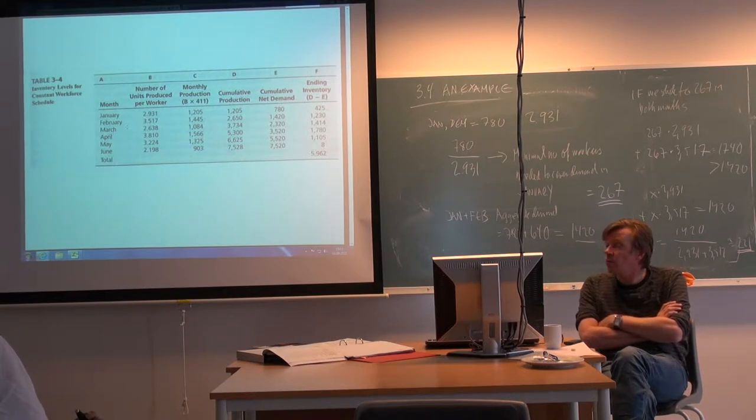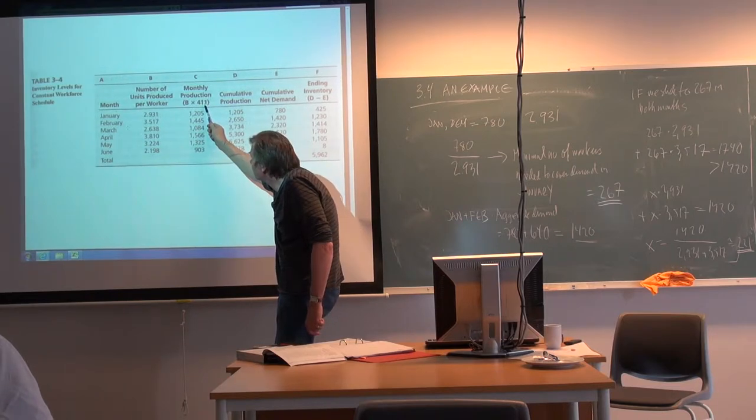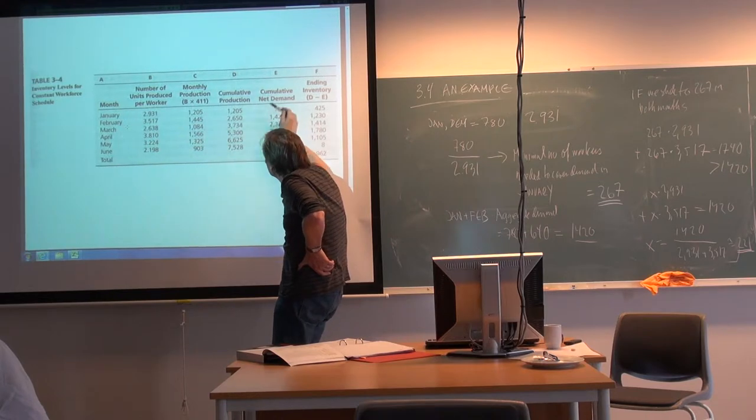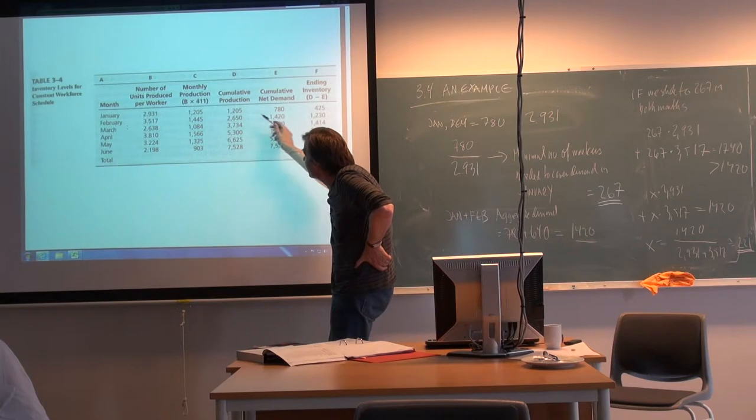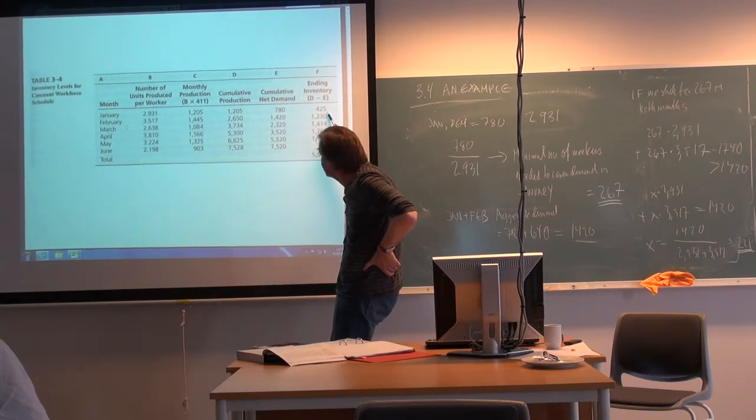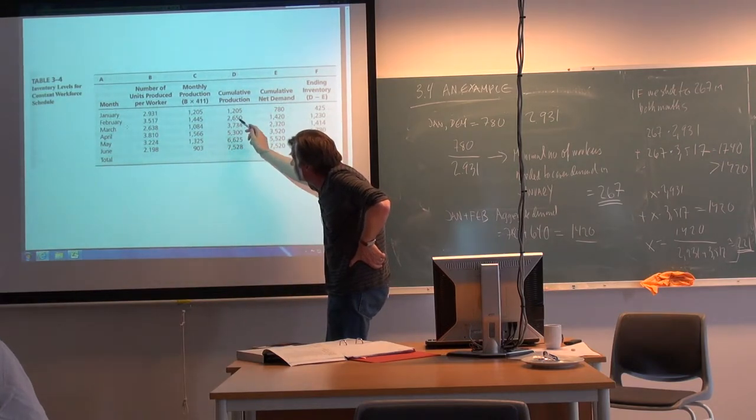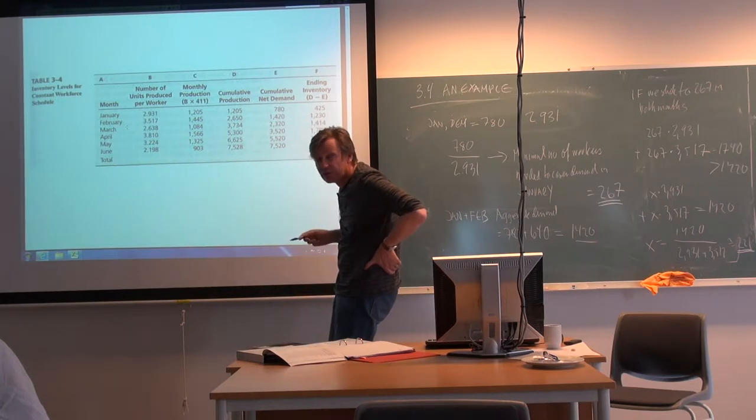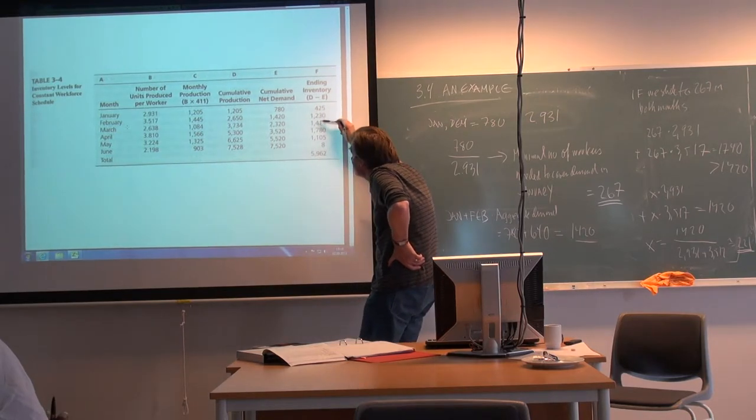We hire 111 people at day one, which then of course results in a total amount of employees of 411. And if you multiply up with this B, number of units produced per worker, we get a production number here. Here actually you have the cumulative production and the cumulative net demand. So you can see how it changes here. At this point you have 1205. Then demand takes 780. So 1205 minus 780 should produce 425, which you put in inventory in the first period. And then up to that point you produce 1445 in February. And if you add that to 1205, you get 2650. That should seem reasonable.